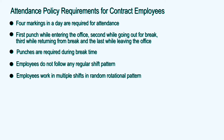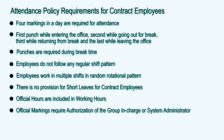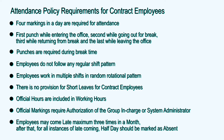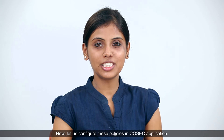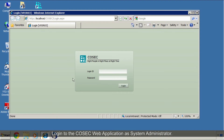Contract employees do not follow any regular shift pattern; they work in multiple shifts in a random rotational pattern. There is no provision for personal hours or short leaves for these employees. Official hours are included in working hours, and official markings require authorization of the group in charge or system administrator. Employees may come late a maximum of three times in a month; after that, for all instances of late coming, half day should be marked as absent.